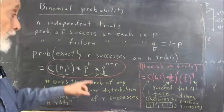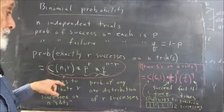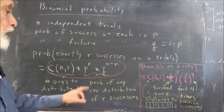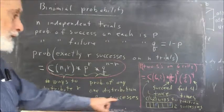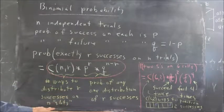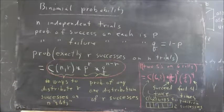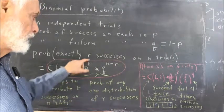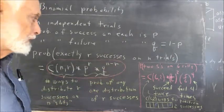Then we have here the probability of any one distribution of r successes. That is, there are C of n, r ways to distribute the r successes on n slots. This is the probability of any one of them: P to the r times Q to the n minus r.